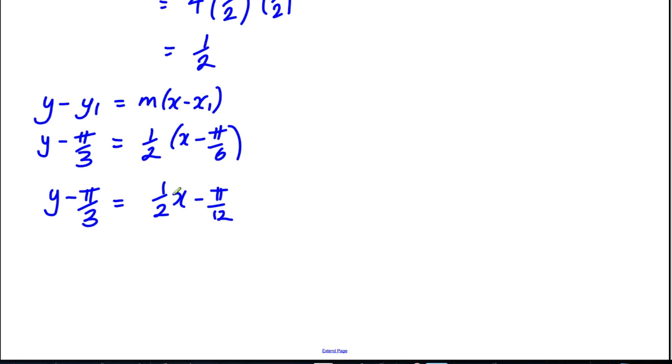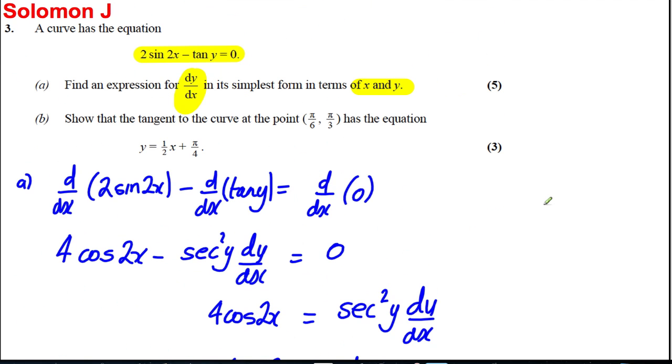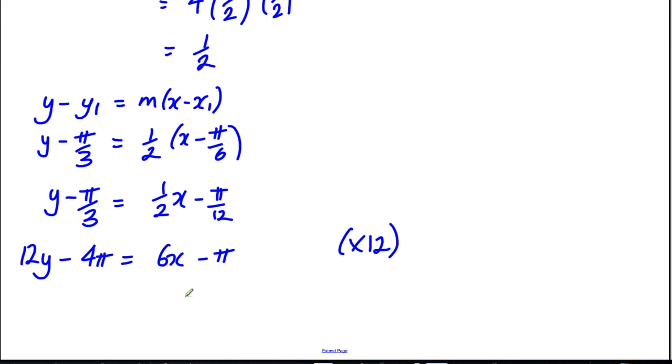Multiplying by half, easiest thing to probably do here is to multiply everything by 12. So we're going to say 12y minus 4π is equal to 6x minus π. And we want it in the form y equals a half x plus π/4, so we're going to try and make y the subject of the formula.